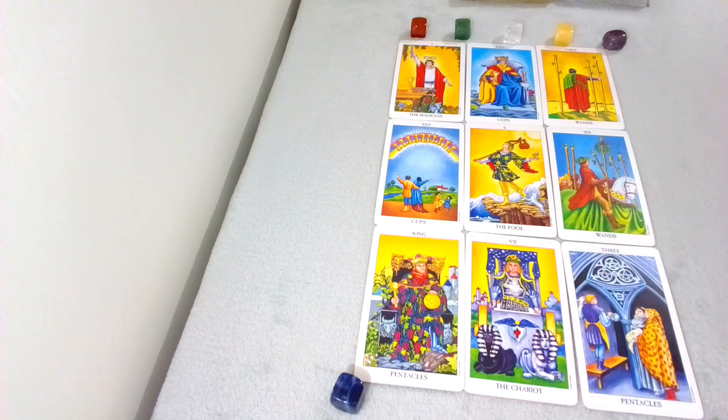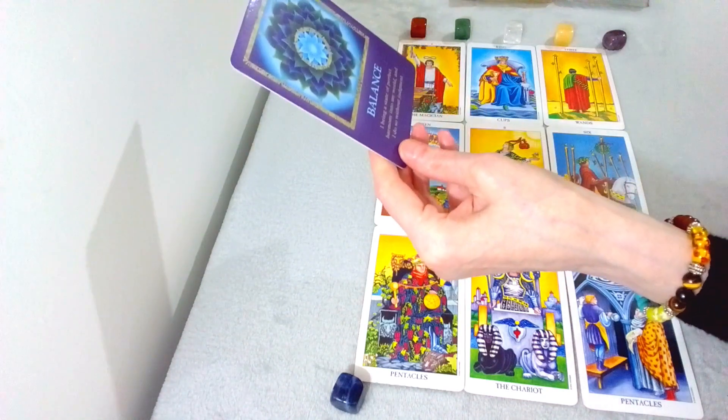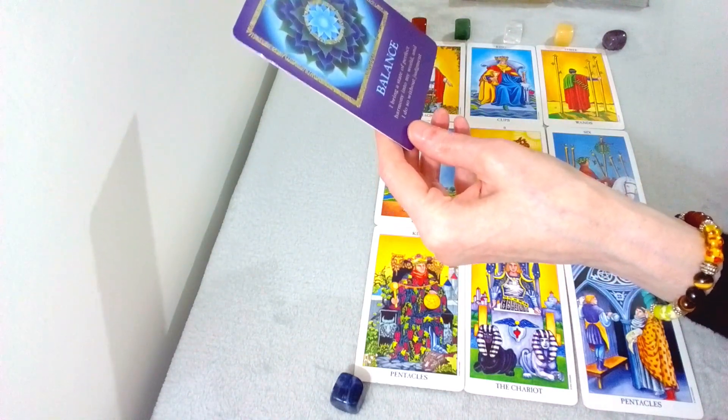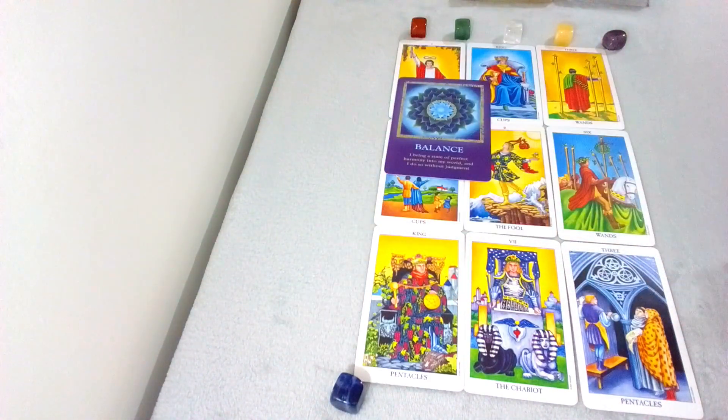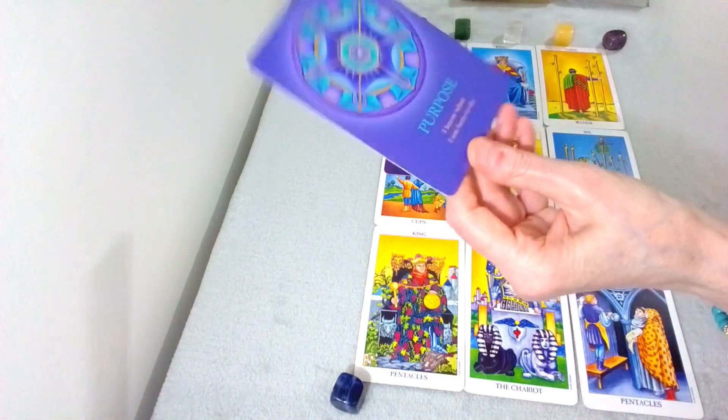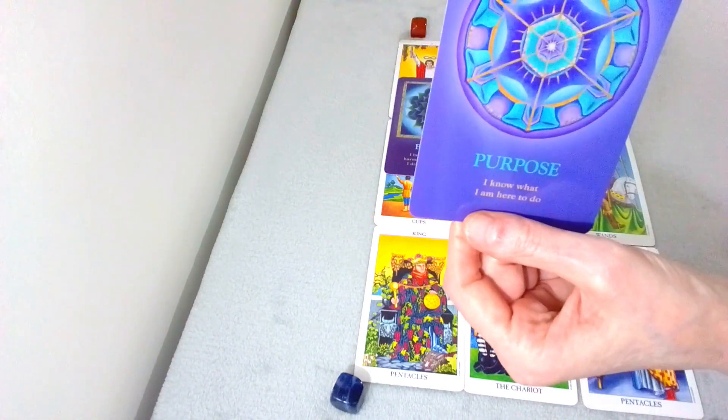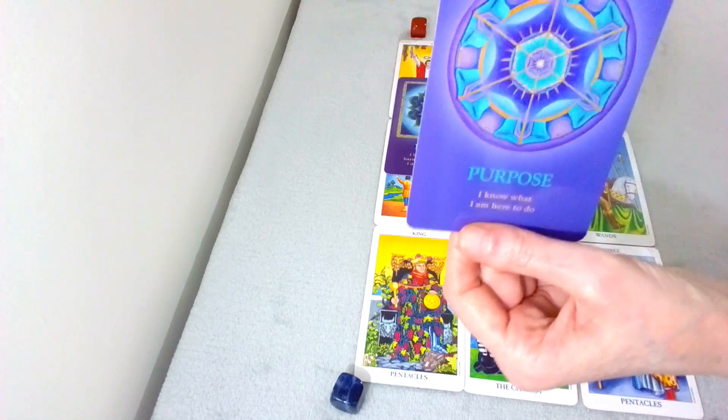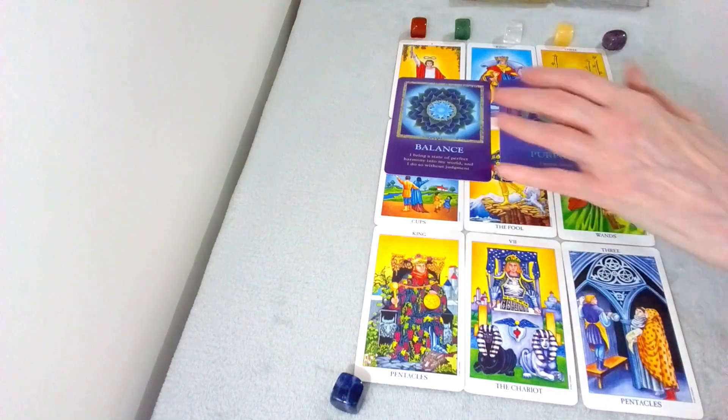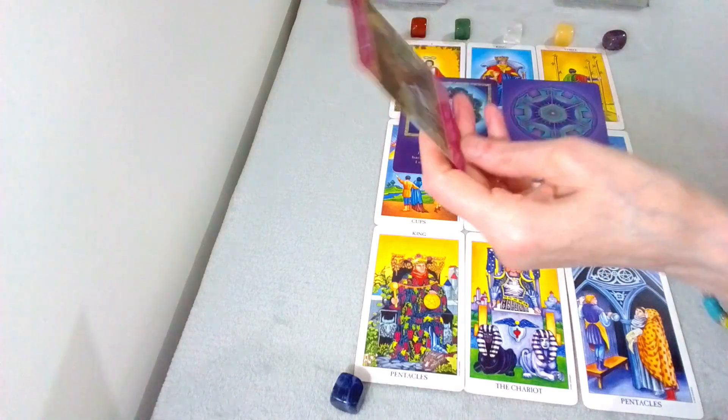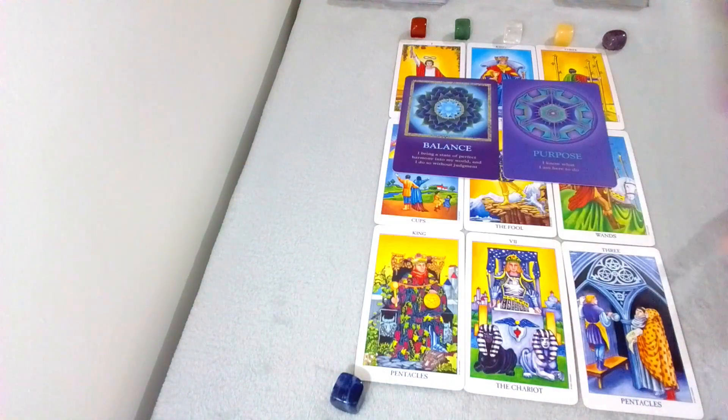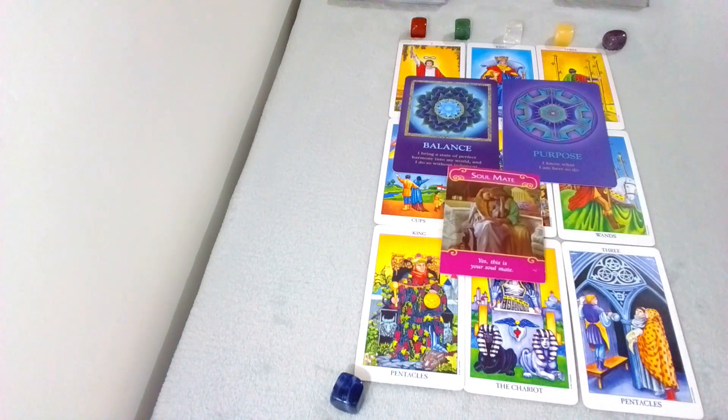I am a state of perfect. I'm in a state, I bring a state of perfect harmony into my world and I do say about judgment. So there's going to be a lot of balance in your life. You're definitely going to have a lot of purpose. I know what I am here to do. Very driven. You know what your purpose is. You found your balance and this is a very happy reading for you. And you could have your soulmate coming in as well to top it all off. You couldn't ask for a better reading.